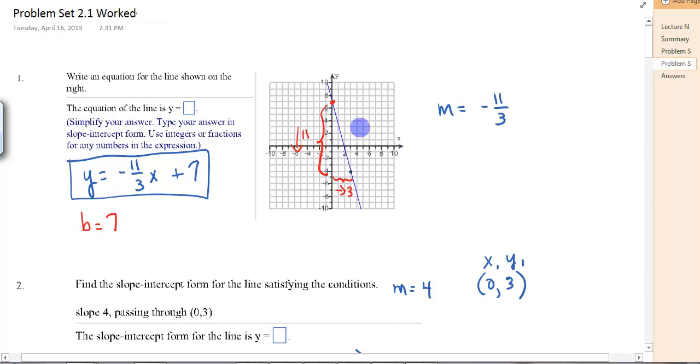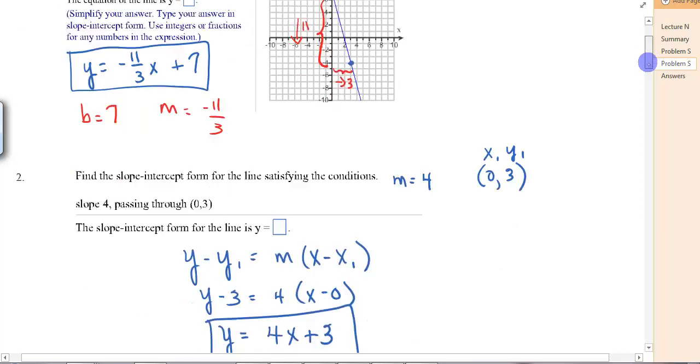The slope, we figure out by how many did we go down and how many did we go over. If we go down, it's always a negative. So we went down 11 units and we went over 3 units to get to this point here. So our slope would be negative 11 thirds. And so we can write that in our equation. y equals negative 11 thirds x plus 7.